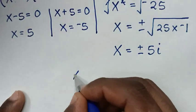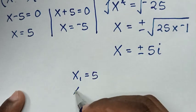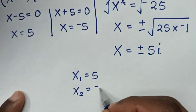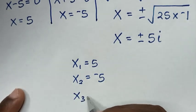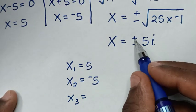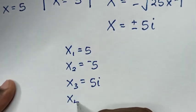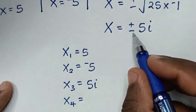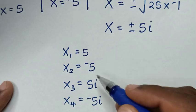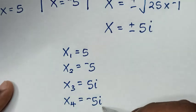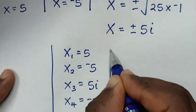We have four solutions in total. The real solutions are x equals 5 and x equals negative 5. The complex solutions are x equals 5i and x equals negative 5i. So we have two real solutions and two complex solutions — these are the final answers for this problem.